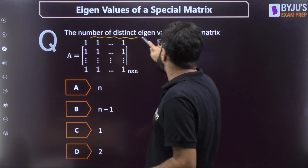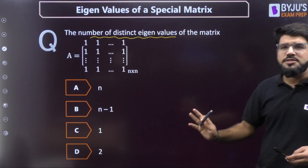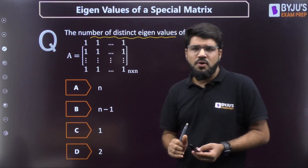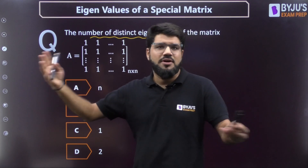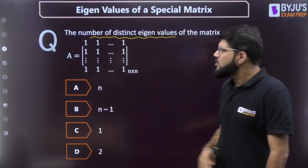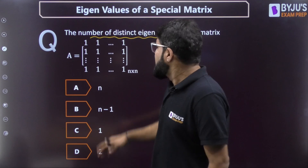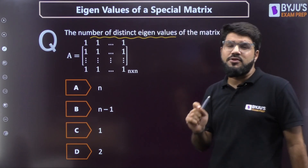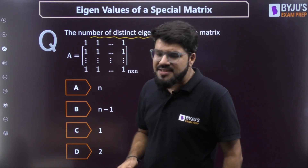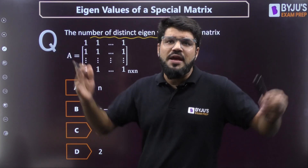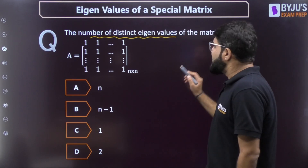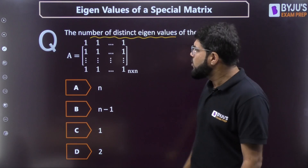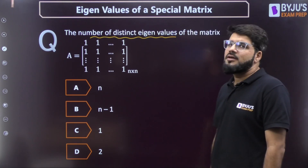The question says: determine the number of distinct eigenvalues of this particular matrix, taken as a generalized n×n matrix — it could be 6×6 or anything. Not only the number of distinct eigenvalues, I'll be able to tell you all the eigenvalues very simply. If you apply the characteristic equation method — |A − λI| = 0 — that's going to be very lengthy. So what should we apply instead? Let's look at the simple solution.